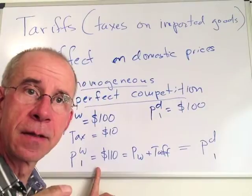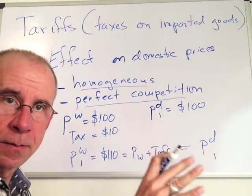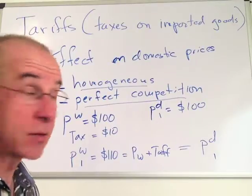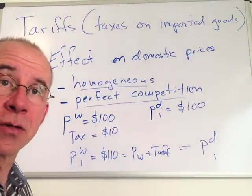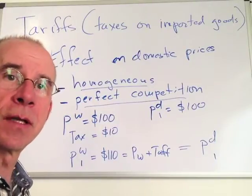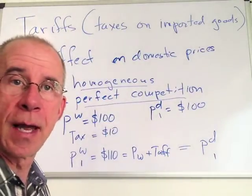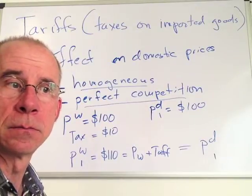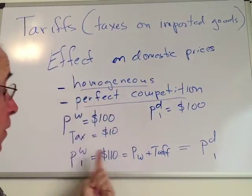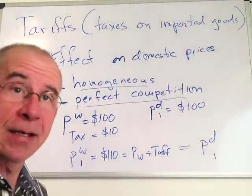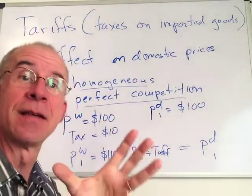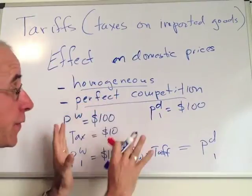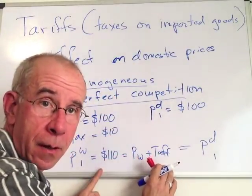For the domestic firm, this means that the tax on the imported good raises the price they can receive in the domestic market. They think this is great — they can now charge $110 rather than the $100 they had before. With homogeneous goods, the price of the foreign good and the domestic good have to end up being the same: they start the same and they have to end the same. So for a homogeneous good under perfect competition, the domestic price goes up by the full amount of the tariff.